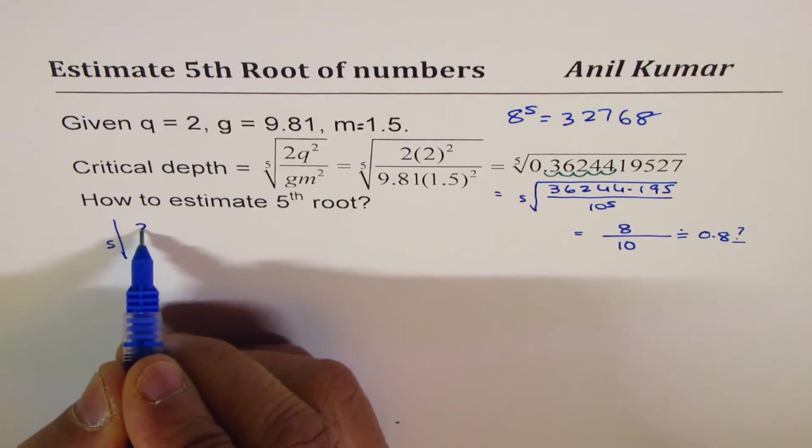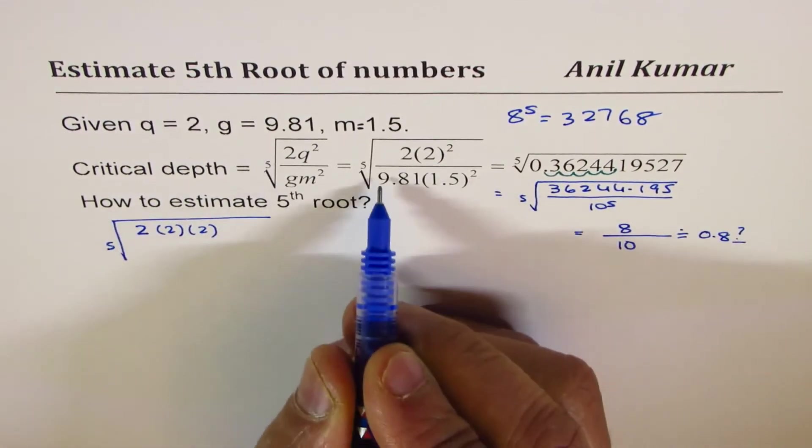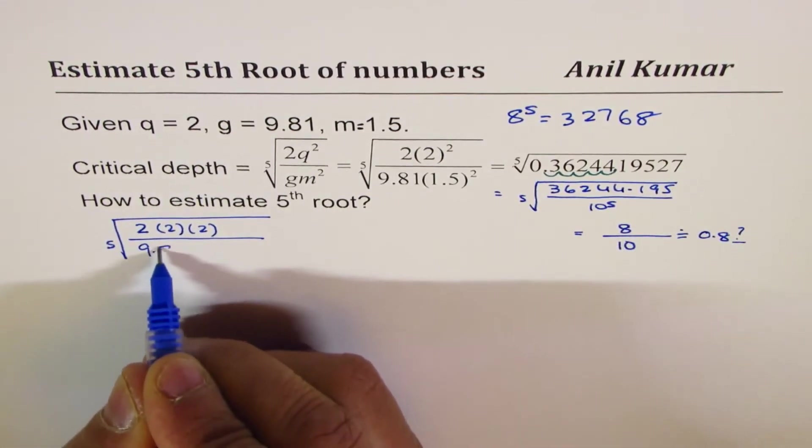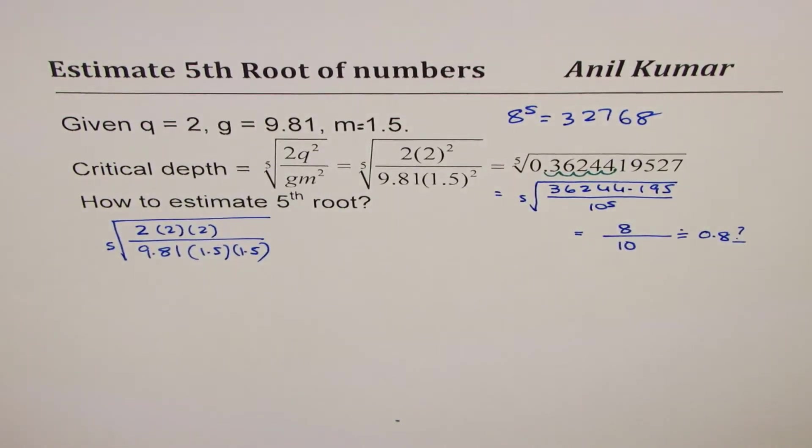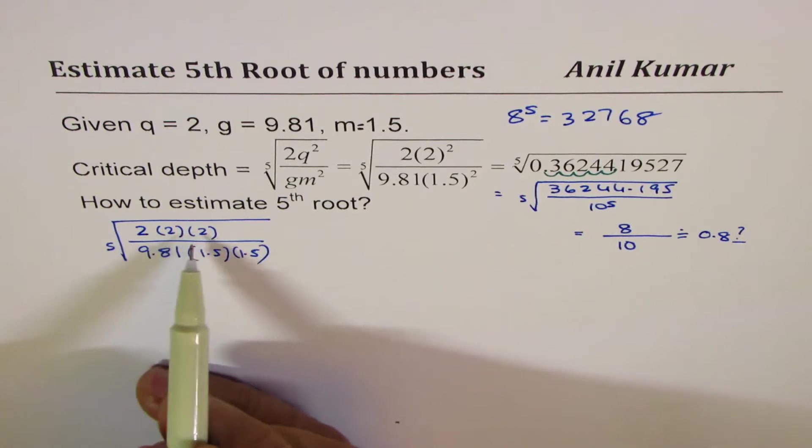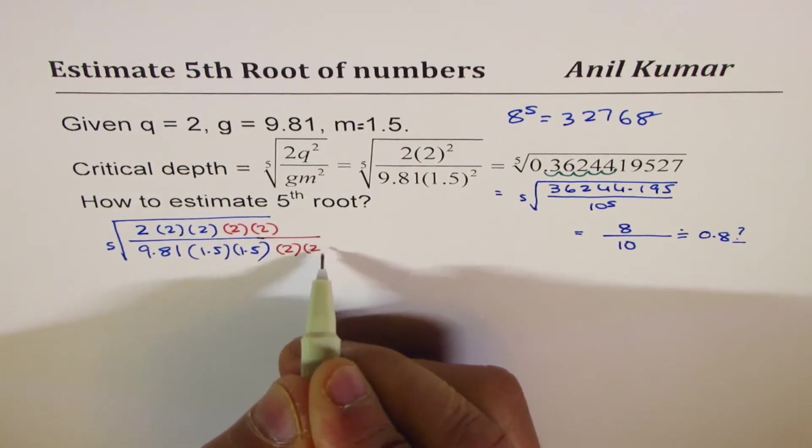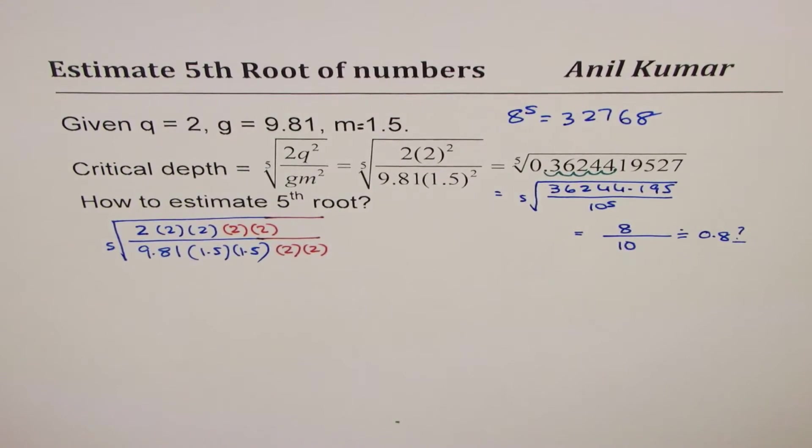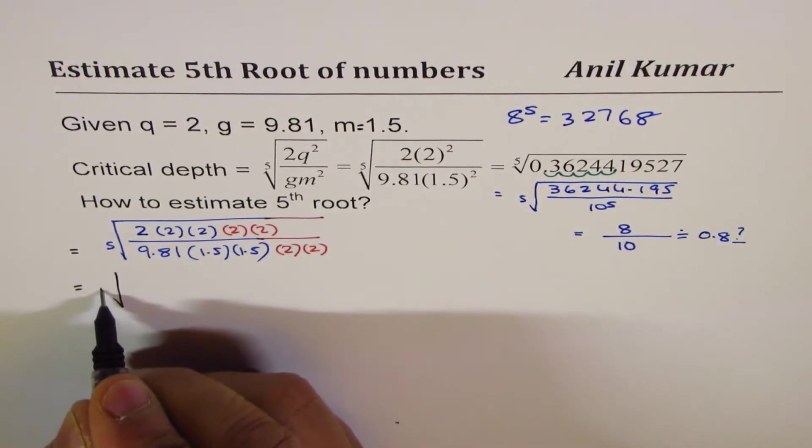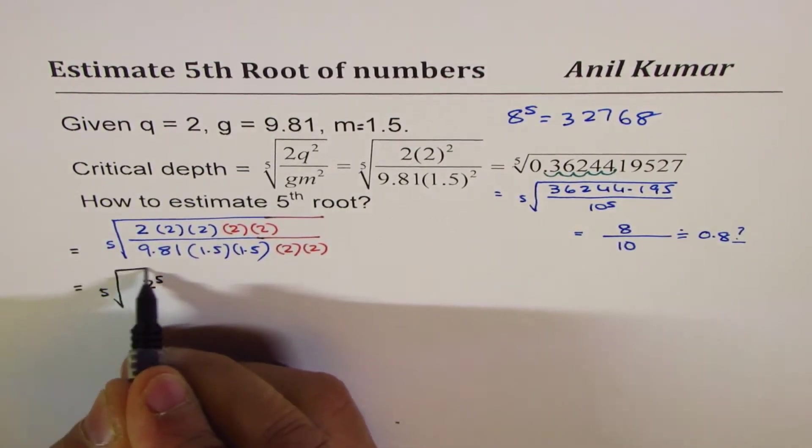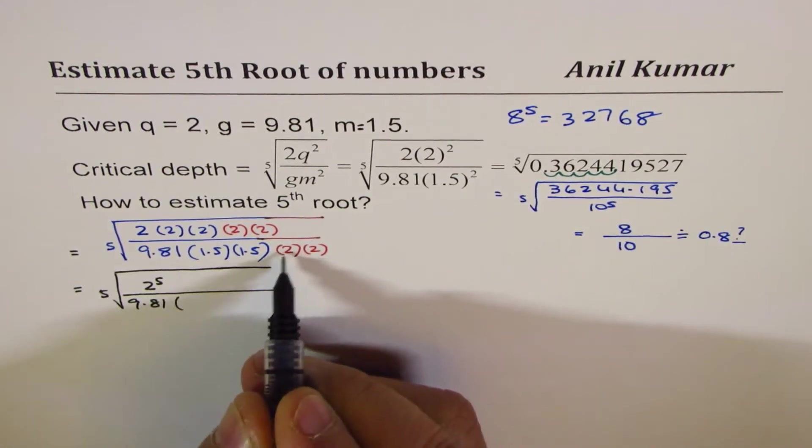So we'll actually begin with the fifth root of the number given to us, which is 2 times 2², so I'll write this as 2 times 2 times 2 in the numerator. The denominator is 9.81 times 1.5 times 1.5. Now to find the fifth root, it's a good idea to make here five twos, so I could multiply by two twos in the numerator and also in denominator. If I do this, what do I get? I get fifth root of 2 to the power of 5.